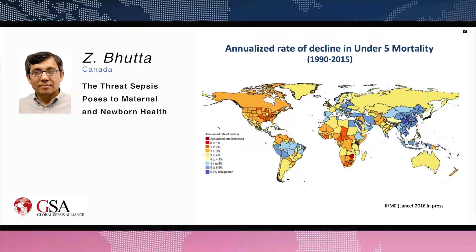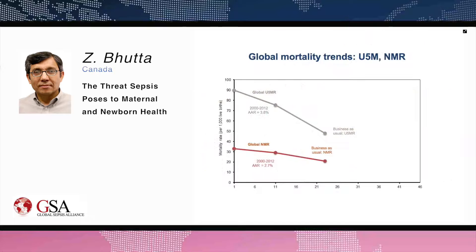But this is a glass half full. Child mortality has gone down by 50%, but if you look at the global distribution of annual rates of decline, you find that while there has been progress in reducing child mortality in Southeast Asia, China, Brazil, parts of Latin America, and some countries of the Middle East, overall progress has varied. In some countries, notably in sub-Saharan Africa and parts of South Asia, progress has been less than optimal and much more needs to be done.